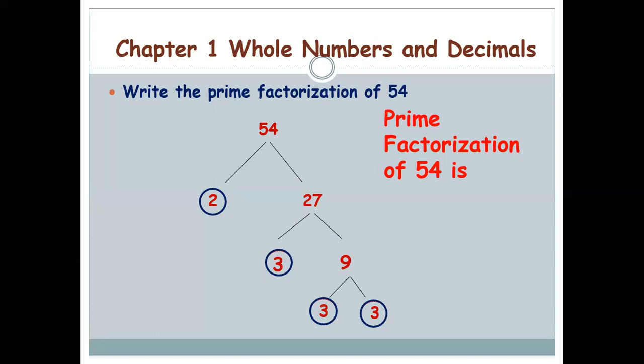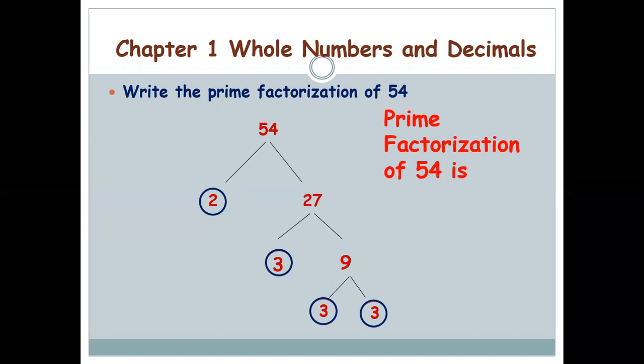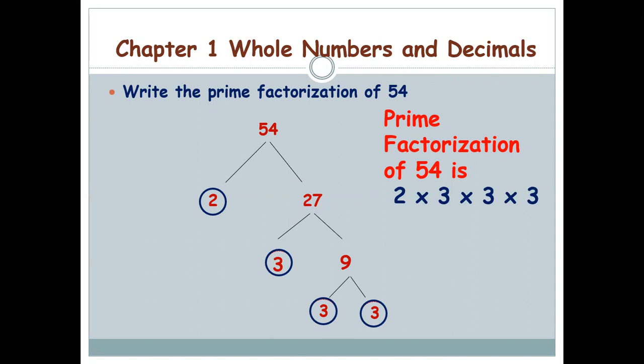Circle 2 and keep it so you can include it when you write the prime factorization as a product of prime numbers. Then you get 27, and 27 is not even, so 3 times 9 is 27 — 3 is a prime factor. Then factorize 9: you get 3 times 3. Written as a product of prime numbers, the answer is 2 × 3 × 3 × 3 — the prime factorization of 54.